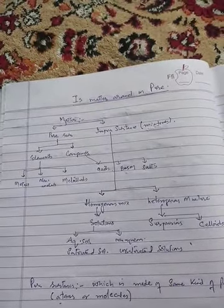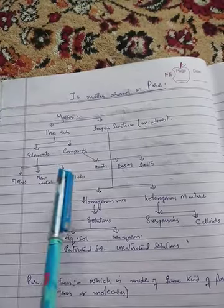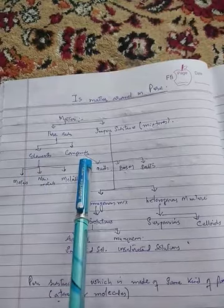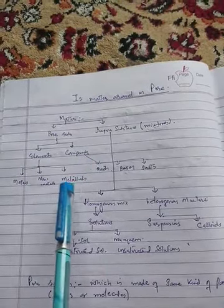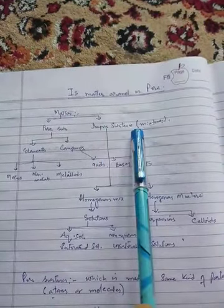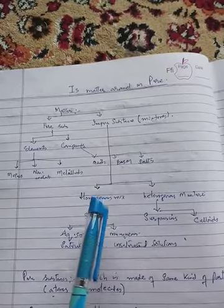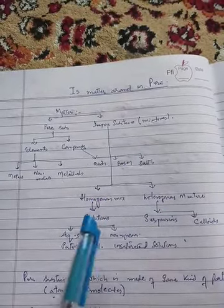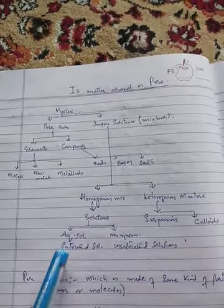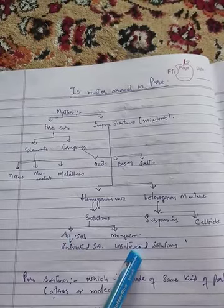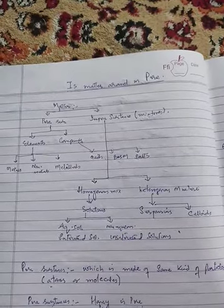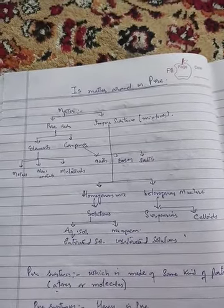In the next video, we will try to understand what pure substances are, what elements are, what compounds are, what metals, non-metals, and metalloids are. In the next video we will also discuss impure substances, their types — homogeneous mixtures, heterogeneous mixtures, solutions, suspensions, colloids, aqueous solutions, non-aqueous solutions, saturated solutions, and unsaturated solutions. Dear students, stay connected.